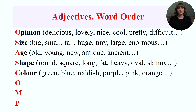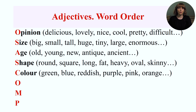Color adjectives describe the color or approximate color of something. Examples: green, blue, reddish, purple, pink, orange, red, black, white.